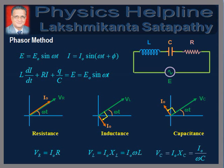The instantaneous voltage of the source is given by E = E0 sin(ωt). It may be noted that in a series circuit, the same current flows through all the circuit elements. Let the instantaneous current flowing through the circuit be I = I0 sin(ωt + φ), where φ is the phase angle by which current leads voltage. At any instant, current in the circuit is I, rate of change of current is dI/dt, and charge on the capacitor is q.